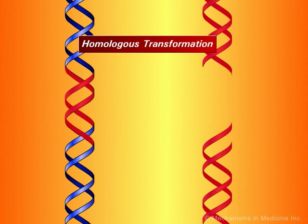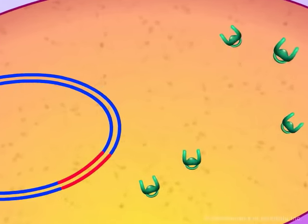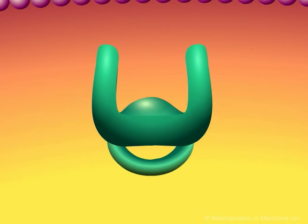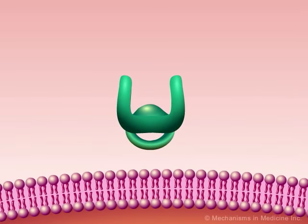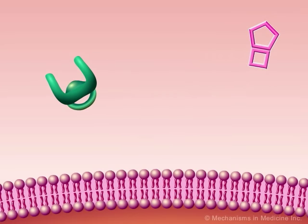Once inside the bacterium, the resistance gene may be transferred from the naked DNA to the chromosome of the host bacteria by a process known as homologous recombination. Over time, the bacterium may acquire enough of these resistance genes to result in a remodeling of the segment of the host DNA. If this remodeled DNA segment codes for cross-linking enzymes, i.e. penicillin-binding proteins, the result is the production of altered penicillin-binding proteins. These altered penicillin-binding proteins can still cross-link the peptidoglycan layers of the cell wall, but have a reduced affinity for beta-lactam antibiotics, thus rendering the bacterium resistant to the effects of penicillin and other beta-lactam agents.